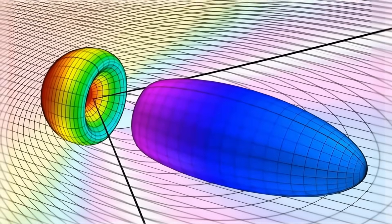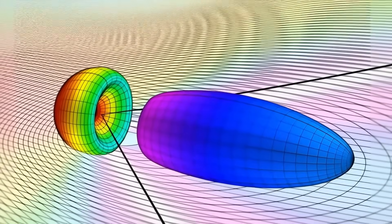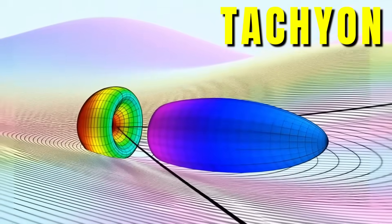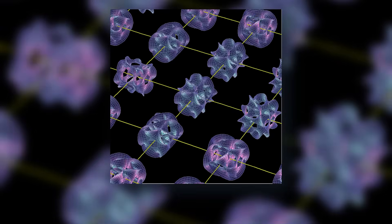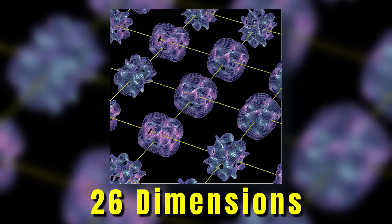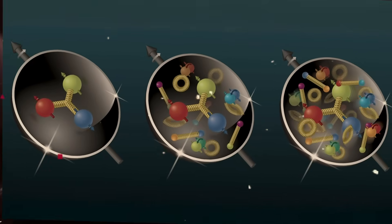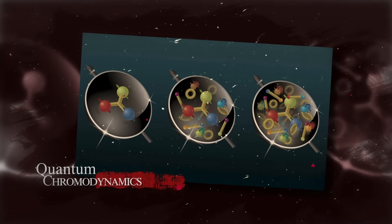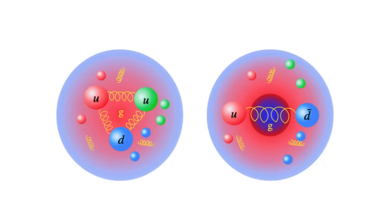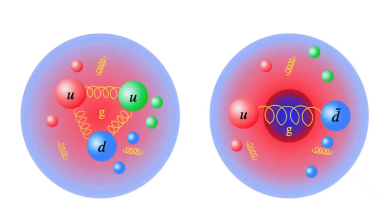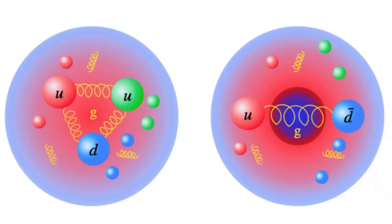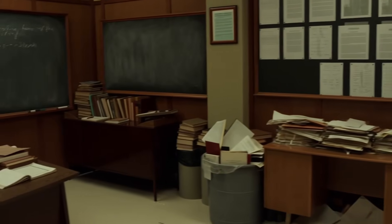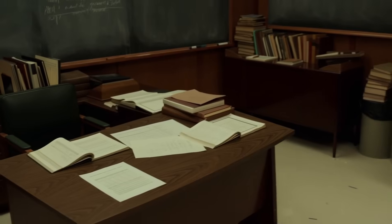The equations contained ghosts, particles that shouldn't exist. One of them, a tachyon, moved faster than light. Others required extra dimensions. Not three, not four, but 26. In the early 1970s, a new theory rose. Quantum chromodynamics, or QCD. It described the strong force perfectly, using quarks and gluons, with no need for strings. One by one, physicists left the dual model behind. The journals went quiet. String theory was dead.